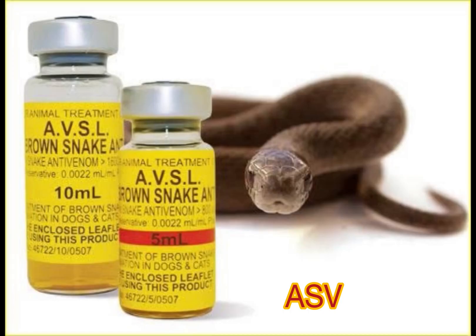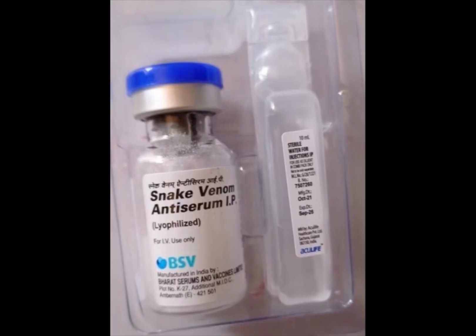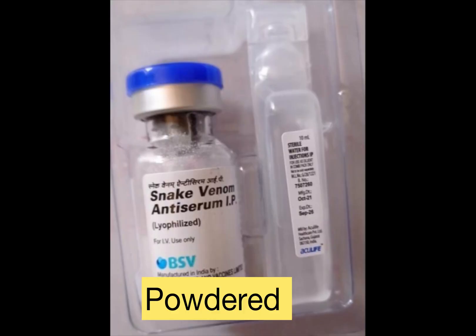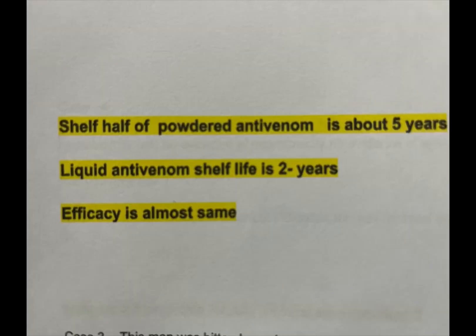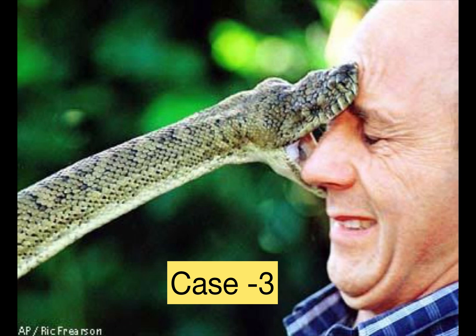ASV comes in two forms: powdered and liquid. The shelf life of powdered antivenom is about 5 years; for liquid antivenom it is 2 years. Efficacy is almost the same.